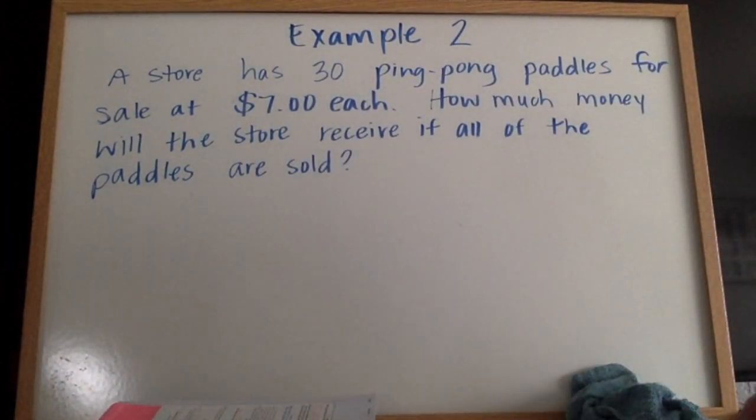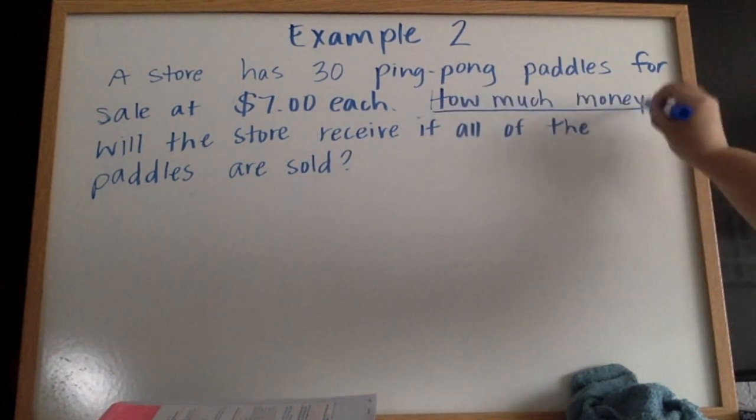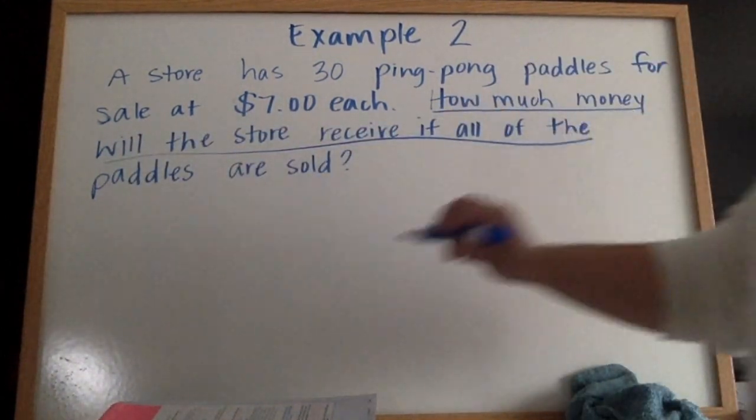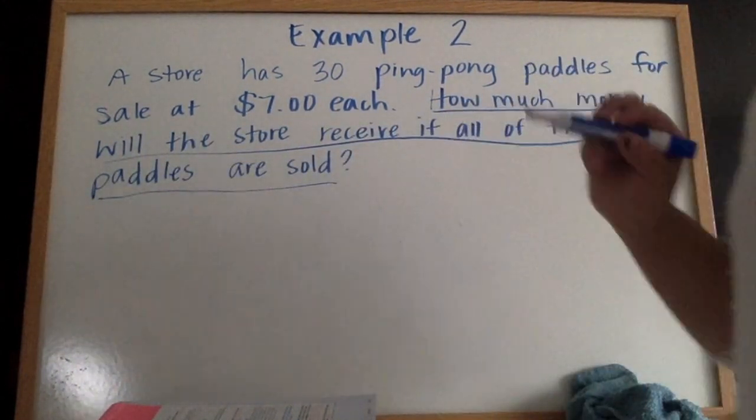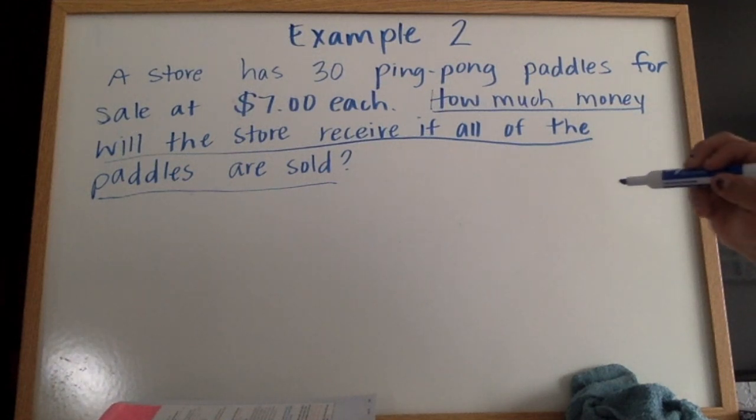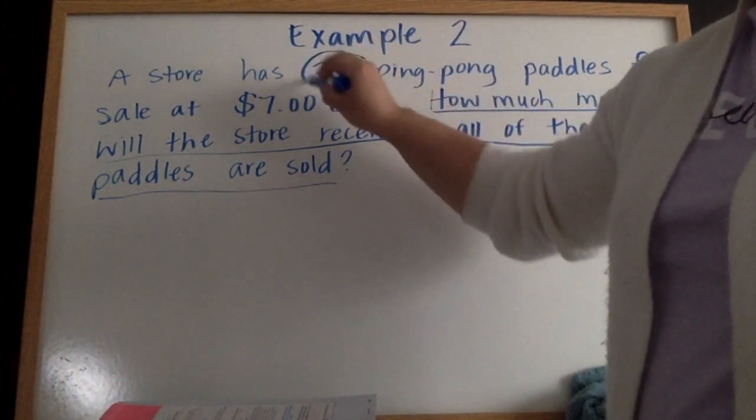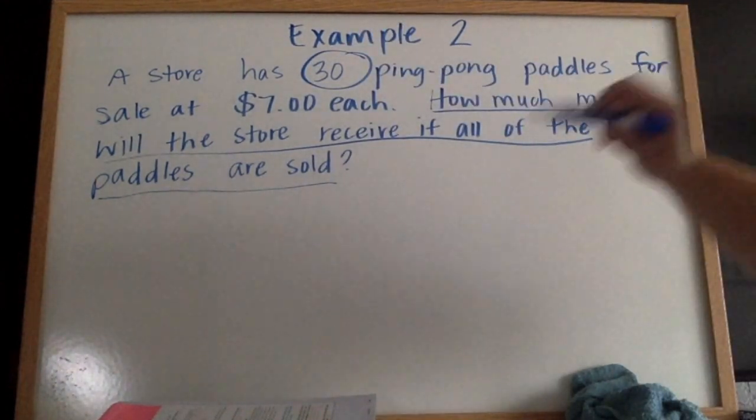Example 2. A store has 30 ping pong paddles for sale at $7 each. How much money will the store receive if all of the paddles are sold? I'm going to underline the question here. How much money will the store receive if all of the paddles are sold? We need to find a total amount of money. We have 30 ping pong paddles and they're $7 each.